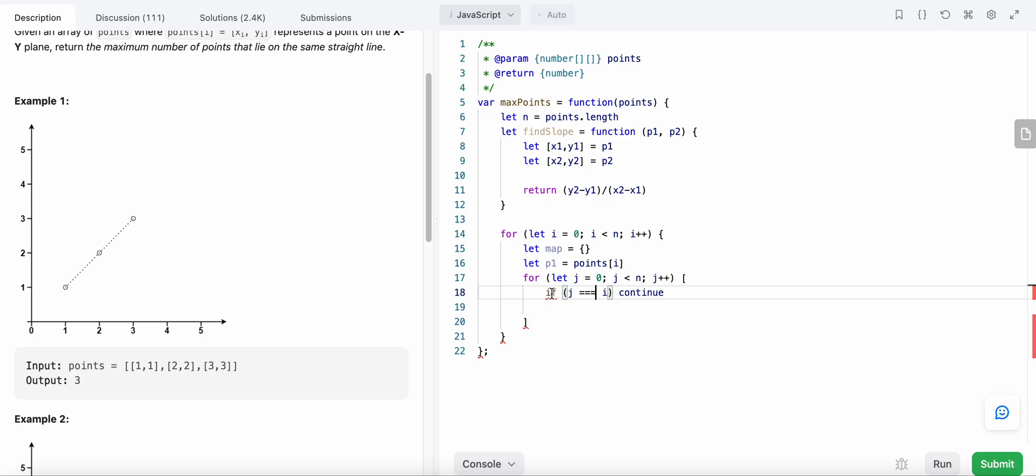We find our slope: slope equals slope of p1 and p2. Now that we have the slope, we need to update our map.